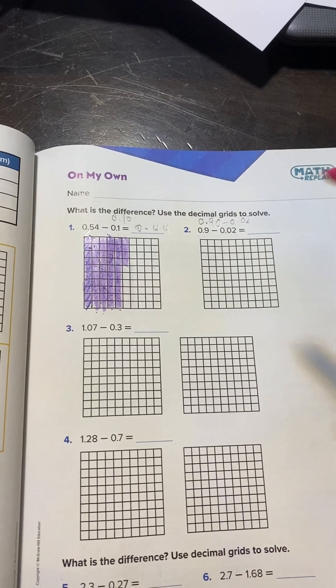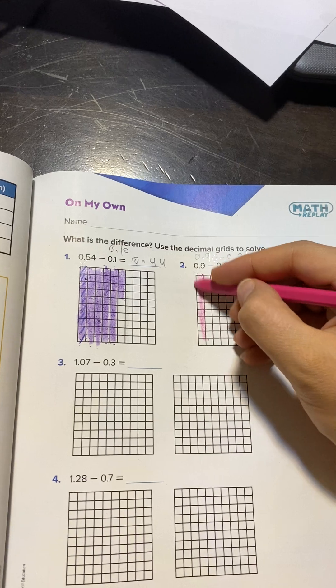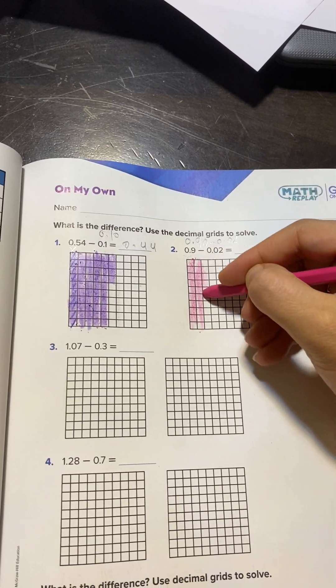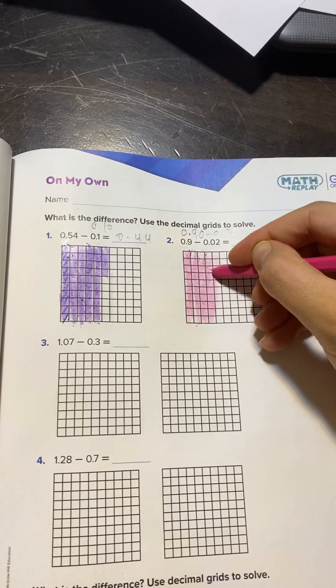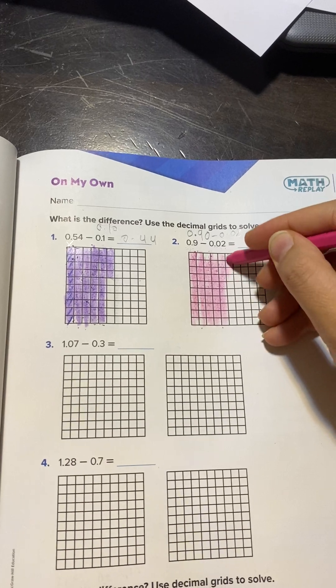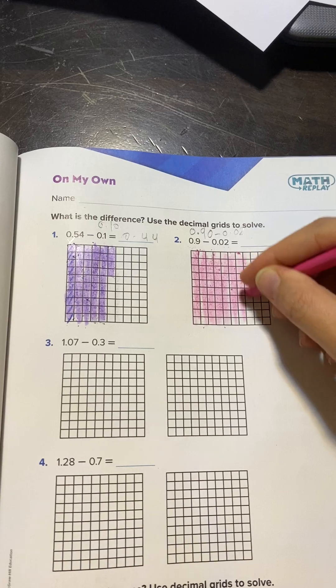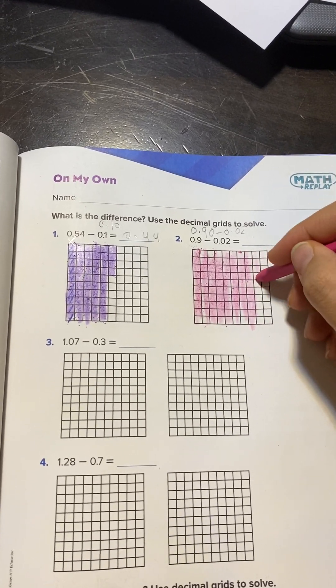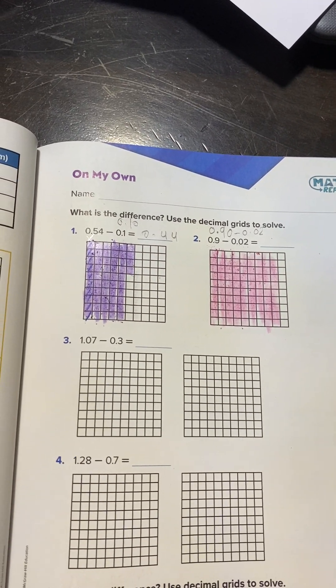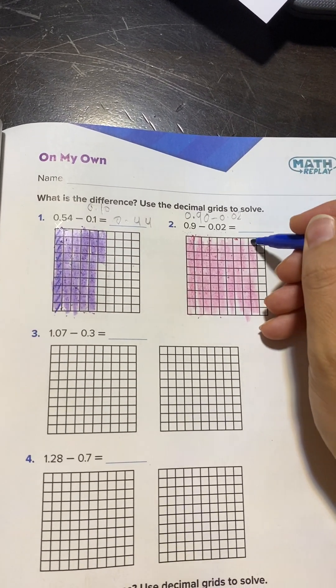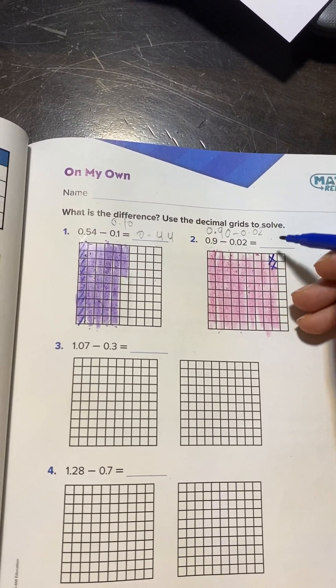So you will color here 9 columns: 1, 2, 3, 4, 5, 6, 7, 8, 9. All of them except one, because this one represents one hundredth. Now I will cancel 2 only. I will cancel 2 squares. So how many left? 90 minus 20 is what?